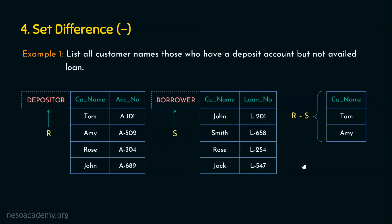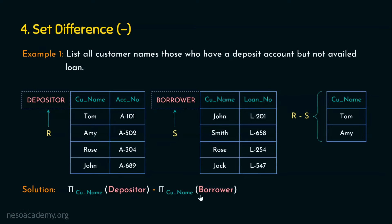What's the query for this? The answer is: we are going to project the customer name from depositor, minus we are going to project the customer name from the borrower relation. The output of the first expression is a temporary table containing all customer names from depositor, and the output of the second is all customer names from borrower. We perform minus between these two outputs, and here is the answer for example number one.